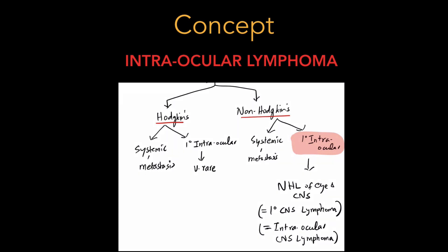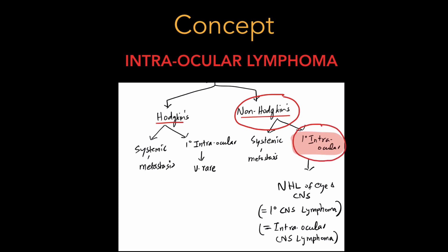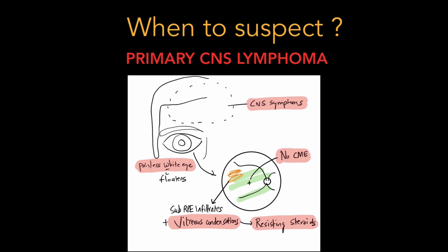Intraocular lymphomas can be either Hodgkin's or non-Hodgkin's lymphoma. Hodgkin's can be systemic or primary intraocular, but primary intraocular Hodgkin's is very rare. Our main consideration is non-Hodgkin's lymphoma — more importantly, primary intraocular non-Hodgkin's lymphoma of the eye and CNS, also called primary CNS lymphoma or intraocular CNS lymphoma. This primary intraocular lymphoma is of high importance because it involves the central nervous system. Suspect primary CNS lymphoma when a patient presents with CNS symptoms.